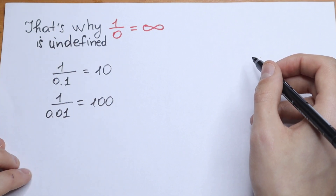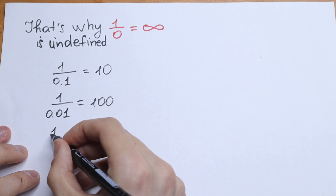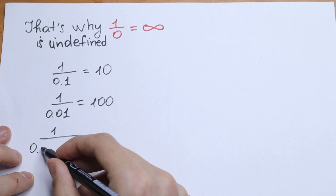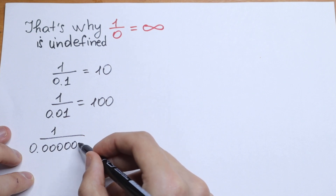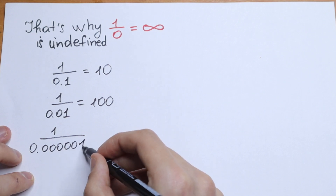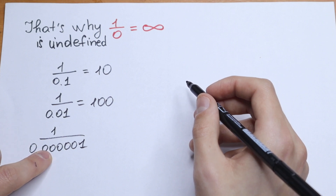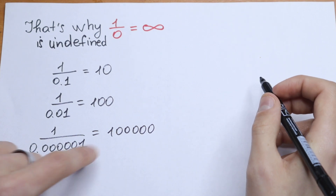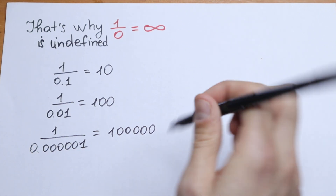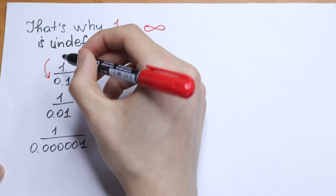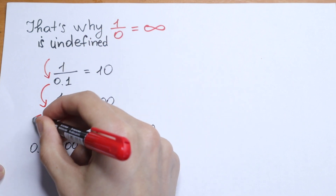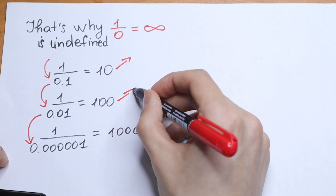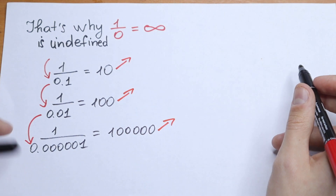Our right side goes to infinity. Let's make one more step. Let's divide 1 by a really small number, 0.00001. As you can see, we will have a really huge number. So if we get closer and closer to 0, our right side will grow up to infinity — higher and higher numbers.